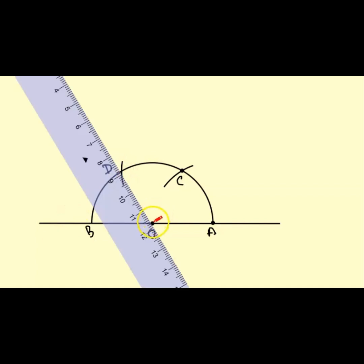Join the points O and D with a straight line. Now A, O, D makes a 120-degree angle. Thank you.